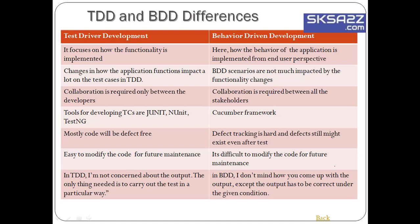Now the differences in detail: TDD stands for Test Driven Development; BDD stands for Behavior Driven Development. TDD focuses on how the functionality is implemented. BDD focuses on how the behavior of the application is implemented from the end user's perspective — QAs and product owners give feedback every time the product is refined.